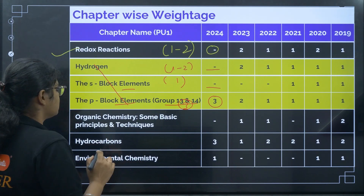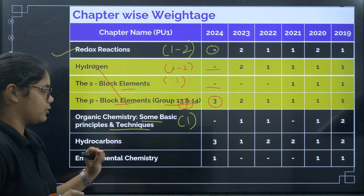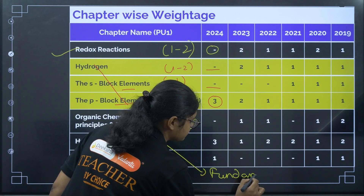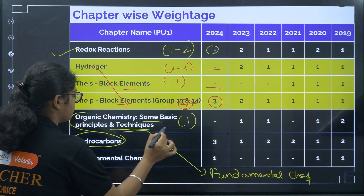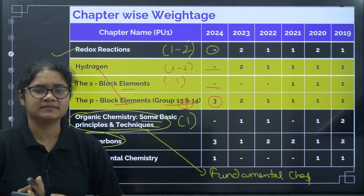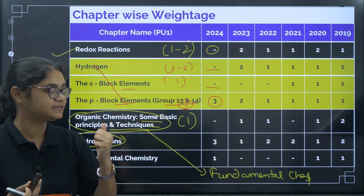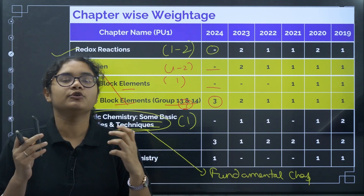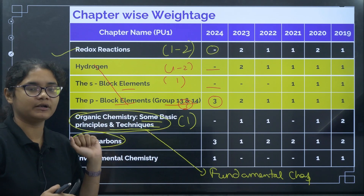Coming to Organic Chemistry: Some Basic Principles and Techniques — you can expect almost one question from this topic. But this is the basic fundamental chapter for organic chemistry. If you don't understand what is an electrophile, nucleophile, addition reaction, or substitution reaction, you will face a lot of difficulties when you study the important organic chemistry chapters in Class 12. So you must clear your concepts from these chapters.